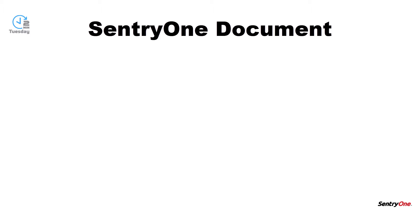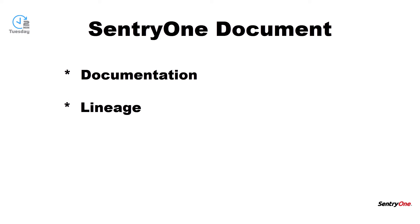Let's begin by talking about what SentryOne Document is. SentryOne Document is a solution that allows you to produce complete documentation for your monitored environment. In addition, SentryOne Document allows you to track object lineage, as well as providing data dictionary functionality, which allows you to create notes about the objects that will be included within the created documentation.